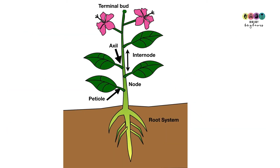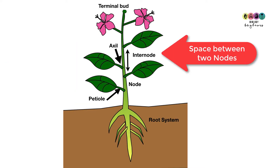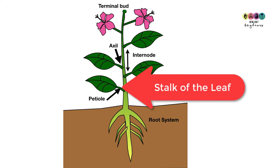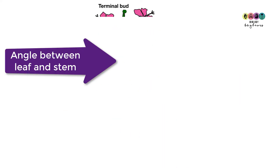Some other labels you need to know: the node, which is the point at which the leaf is attached to the stem; the internode, which is the space between two nodes; the petiole, which is the stalk of the leaf; and the axil, which is the angle created between the leaf and the stem.